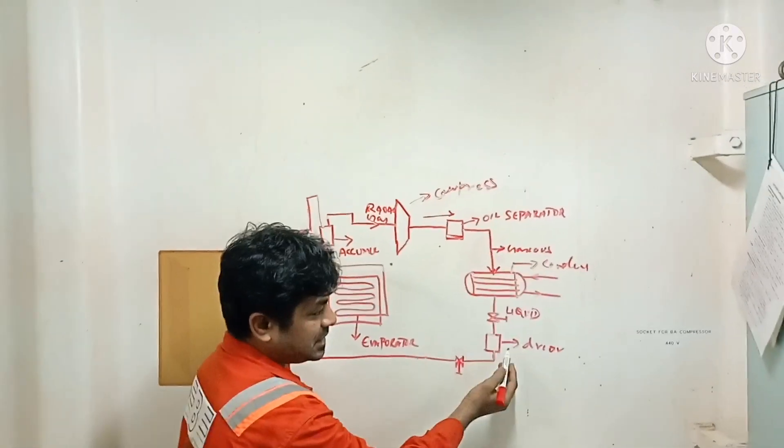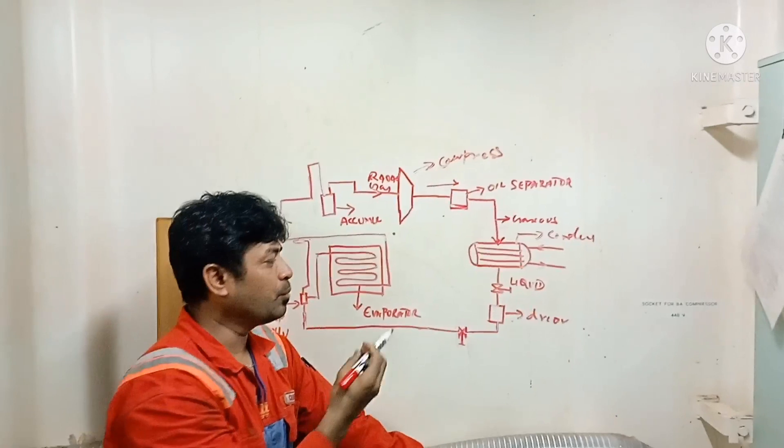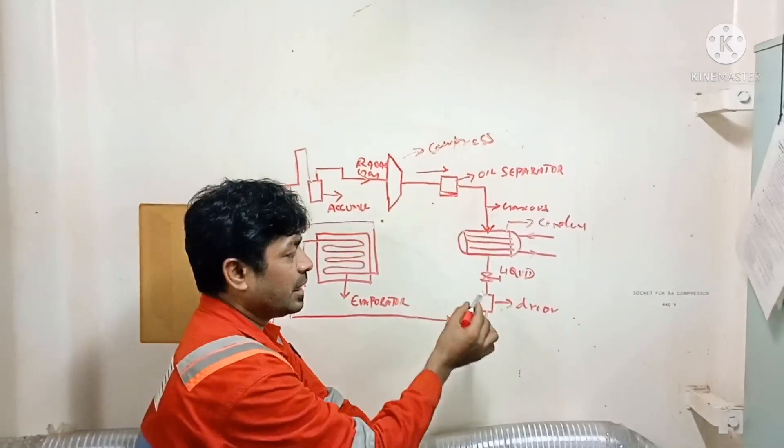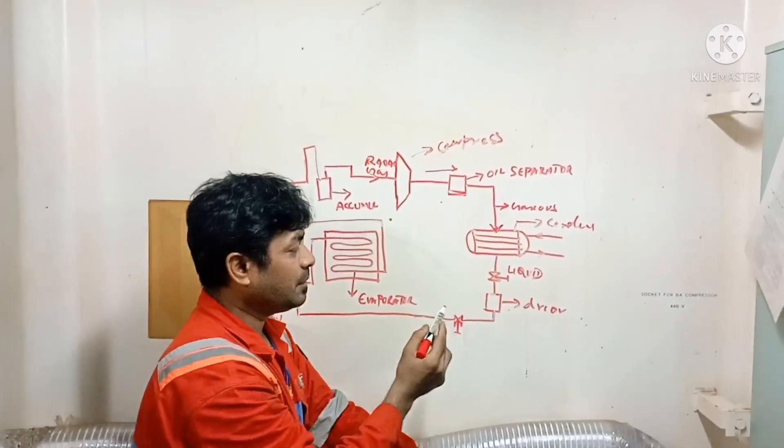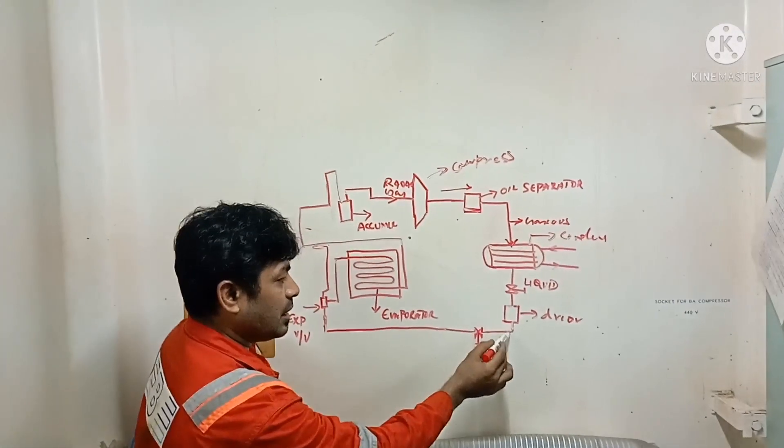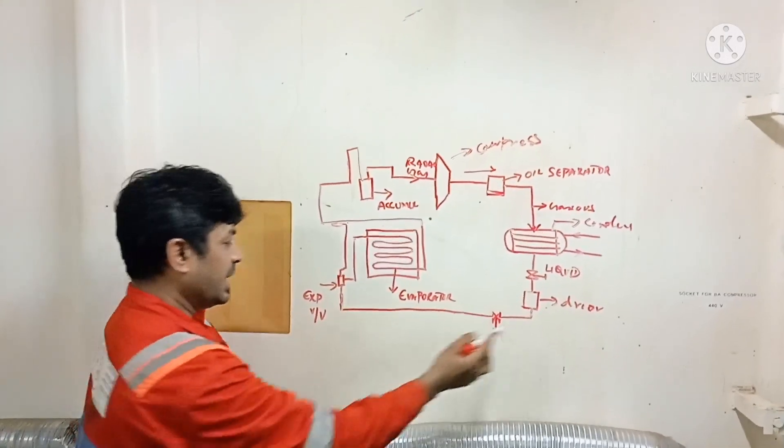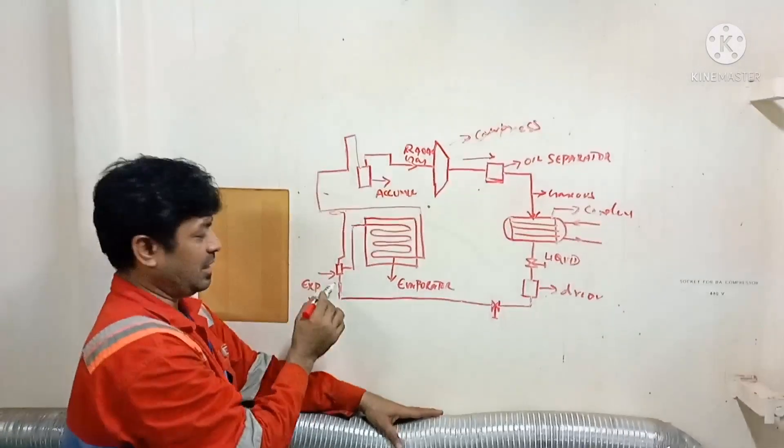The liquid passes through the dryer. The function of the dryer is to remove any moisture, any dirt in the gas - it will filter it. From there, the liquid R404, whatever refrigerant we are using, it flows to the expansion valve.